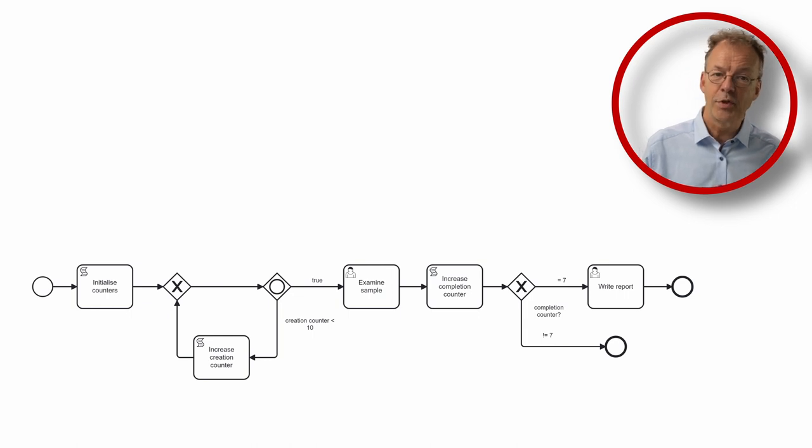We use two counters. A creation counter to produce 10 tokens for the task examine sample and a completion counter to let us write the report once 7 samples have been examined.